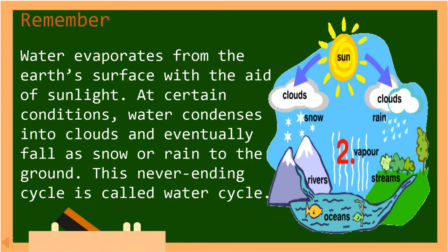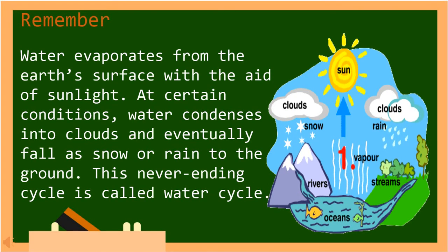Water evaporates from the earth's surface with the aid of sunlight. At certain conditions, water condenses into clouds and eventually falls as snow or rain to the ground. In Tagalog, sa ilang mga kondisyon, ang tubig ay dumadaloy sa ulap at kalaunan ay nanghulog bilang niebe o ulan sa lupa. Ang siklo na walang katapusan na ito ay tinatawag na cycle ng tubig.